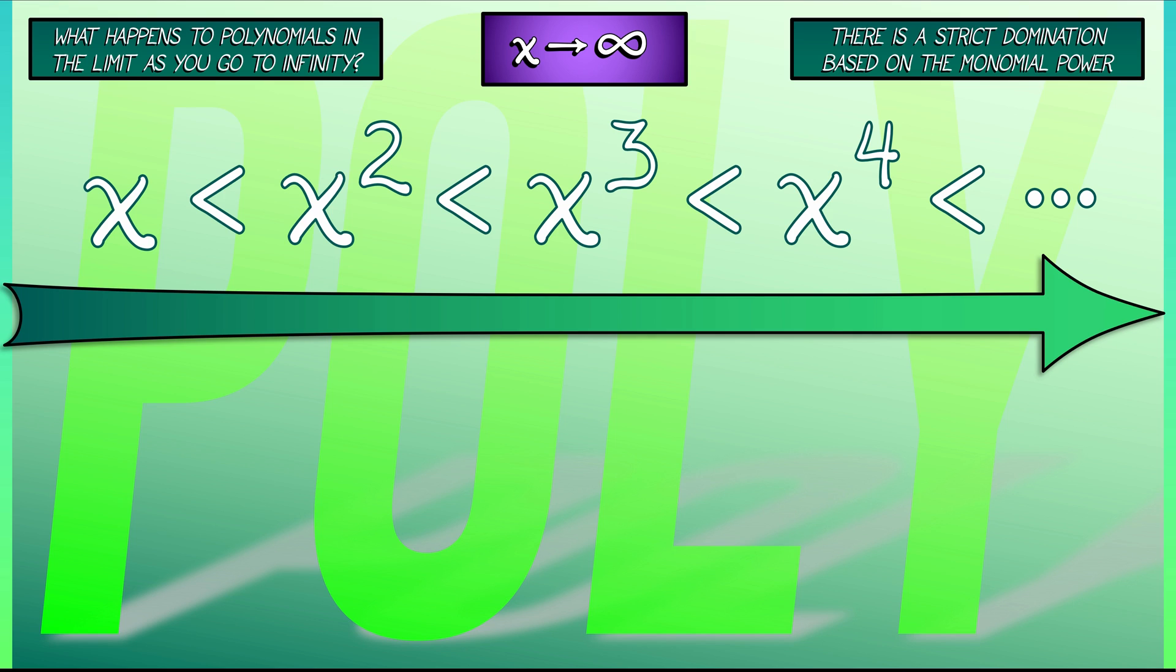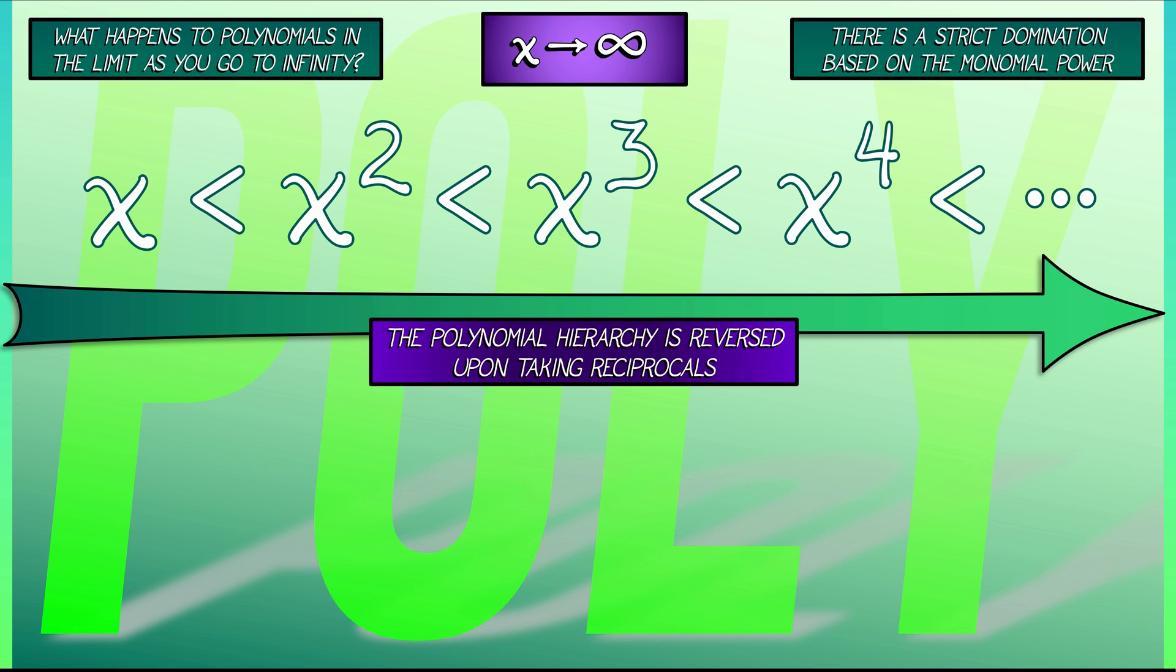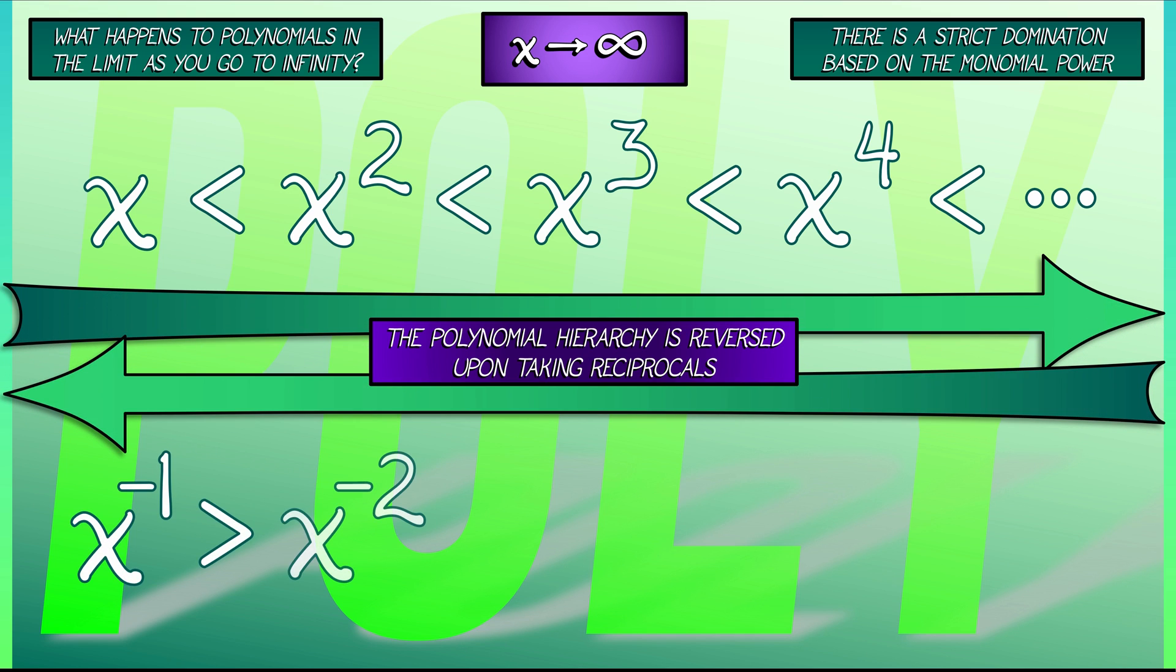Now, what happens when you take reciprocals? This ordering, this hierarchy is reversed when you take the reciprocals of these terms. So, what I mean by that is 1 over x is bigger than 1 over x squared, is bigger than 1 over x cubed, et cetera. Again, this is all in the limit as x is going to infinity.